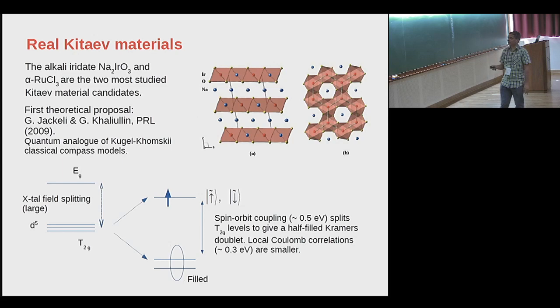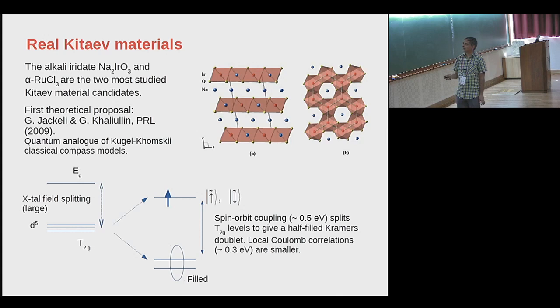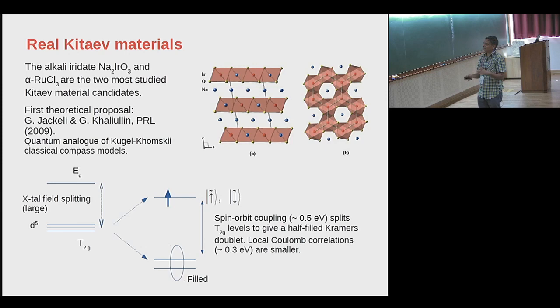What about real Kitaev materials? Two classes of materials have been very widely studied: one is the alkali iridates, most notably sodium iridate, and the other is alpha-ruthenium trichloride, which was first reported in a paper co-authored with Shubra. These are the two most widely studied Kitaev material candidates. The first theoretical proposal based on the sodium iridate system was made in 2009 — it's a quantum analog of the Kugel-Khomsky classical compass models. In sodium iridate, the iridium atoms are surrounded by octahedra of oxygen atoms, and they form a sort of crumpled honeycomb lattice.